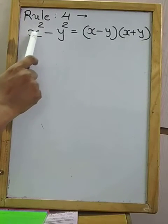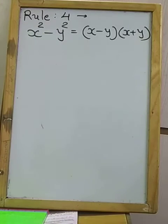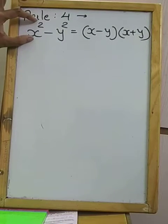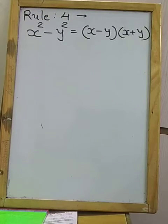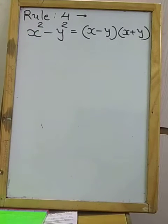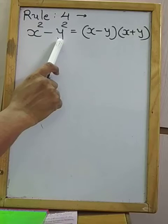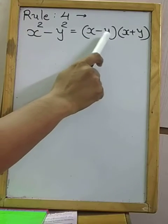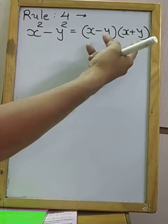Square of first term minus square of last term — means both terms must be perfect squares — and there is a minus between them. So take the first root and second root: one bracket with minus and the other bracket with plus.